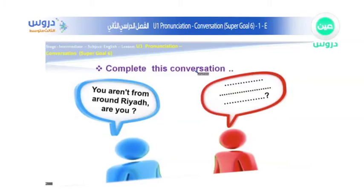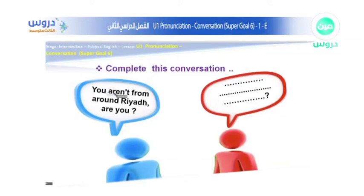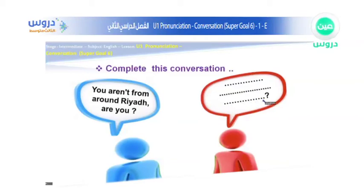Now I want you to complete a similar conversation. For example, we have a conversation between two people. One says: 'You aren't from around here, are you?' — this is a tag question. If I'm from Jeddah, I should say: 'No, I'm not. I'm from Jeddah.' Then you can ask: 'What about you?' This is how you make a question and respond to it.